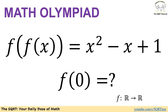Hello everyone, welcome to the CRT channel. In this video we are going to take a problem from previous math competitions. This problem is kind of common in different math competitions. We have a composite function: f of f of x equals 2x squared minus x plus 1, and f is a function from real numbers to real numbers. What we are going to find is f of 0.